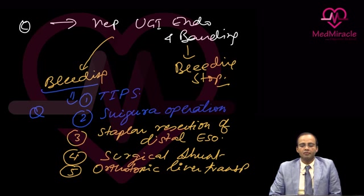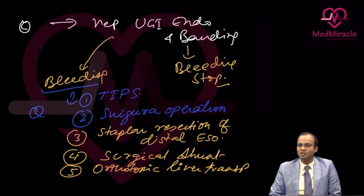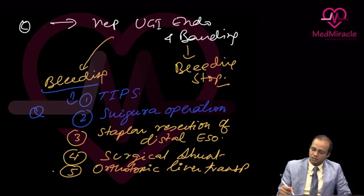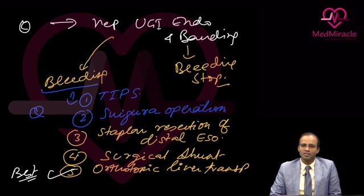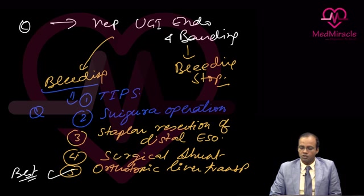If the question asks which is the best option for a patient with portal variceal bleed, the answer is always orthotopic liver transplantation, because it not only treats the varices but also treats and manages hepatic cell failure.